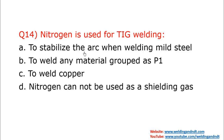Question number fourteen — this is the last question: nitrogen is used for TIG welding — option A: to stabilize the arc when welding mild steel; option B: to weld any material grouped as P1; option C: to weld copper; option D: nitrogen cannot be used as a shielding gas. I would expect you to write the answer in the comment box. The hint is: while explaining question number one in this video, I explained different types of shielding gas, and the answer is there. Go back to question number one and you will find the answer. Please write the answer in the comment box.